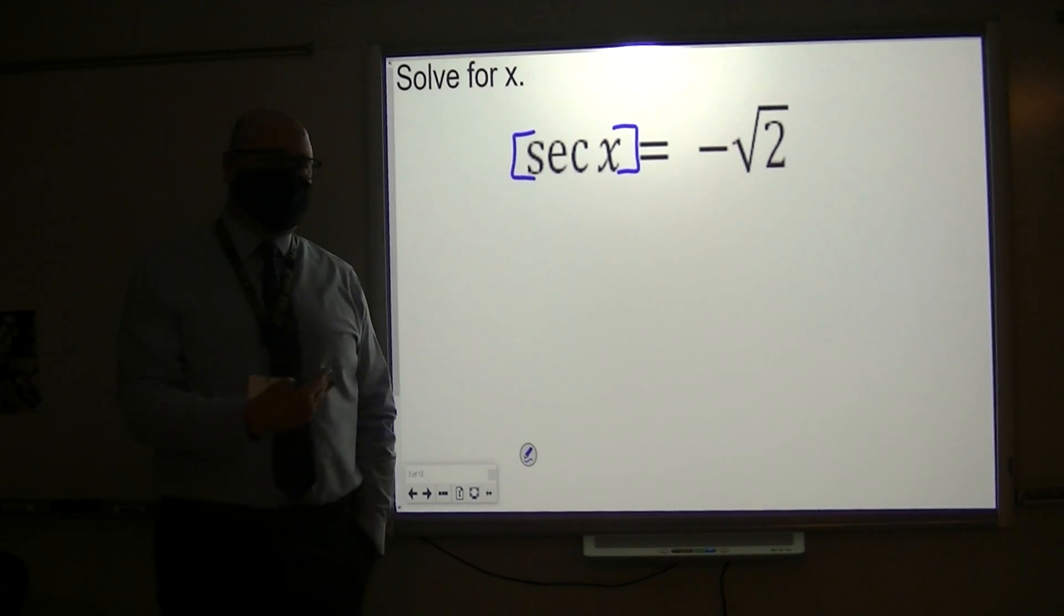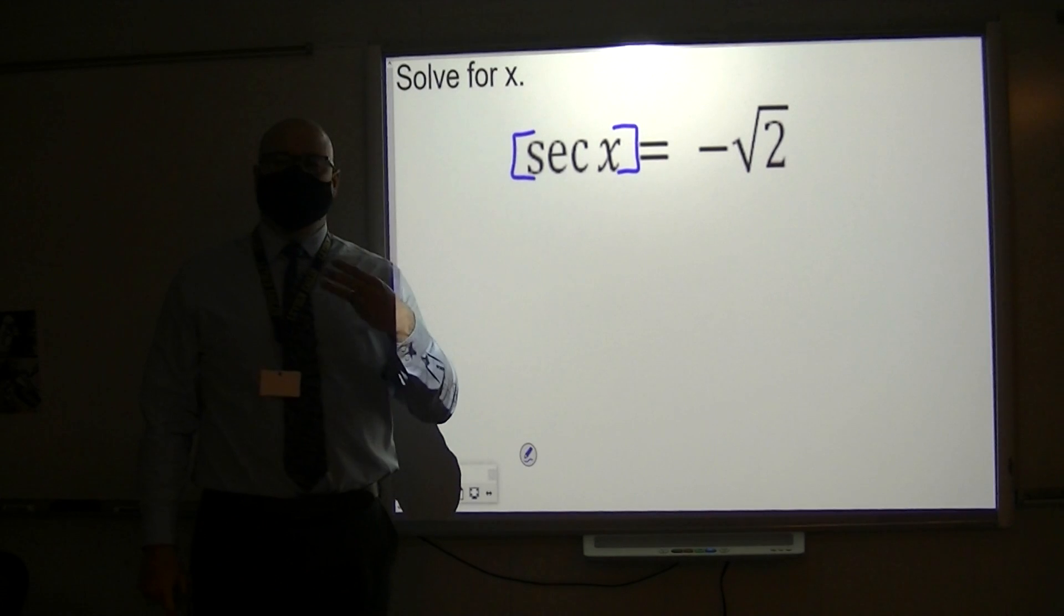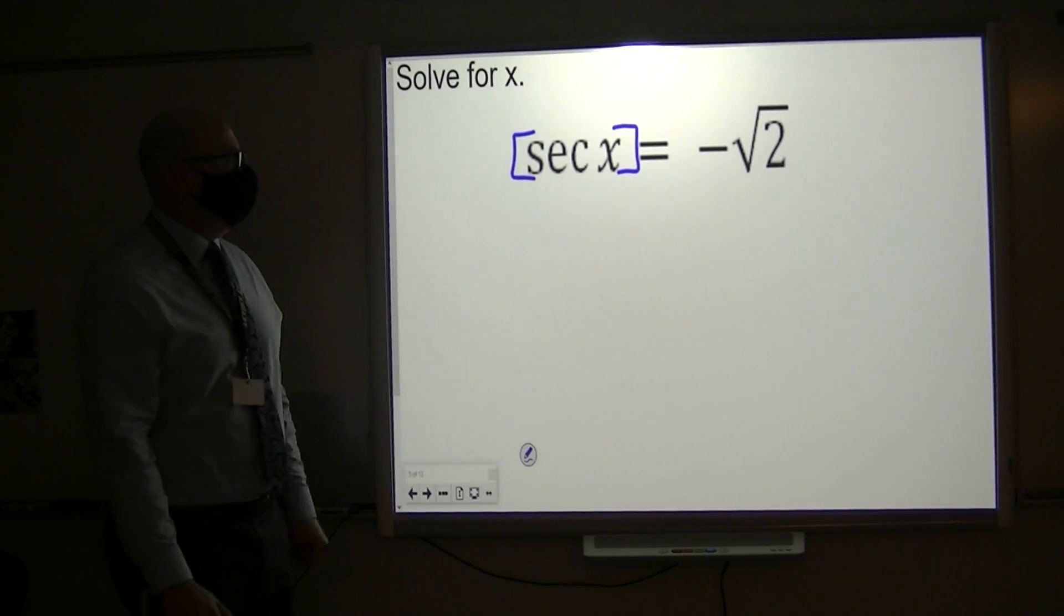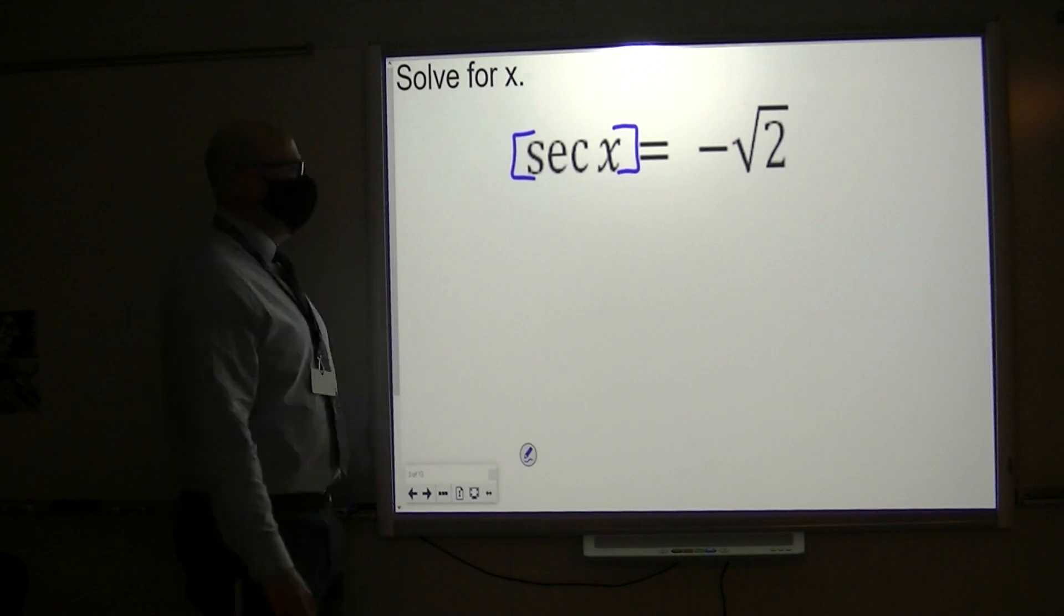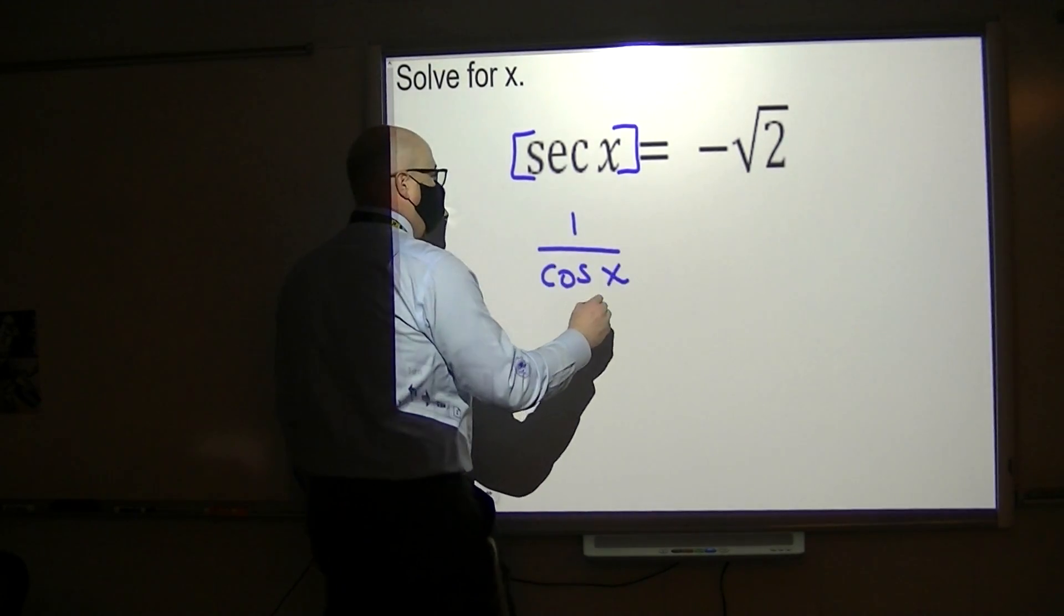We've tried to streamline things here. We have arc sine, arc cosine, and arc tangent. We don't talk about arc secant, and that's okay that we don't do that. Instead, let's replace this with its cosine equivalent, which would be one over cosine x.